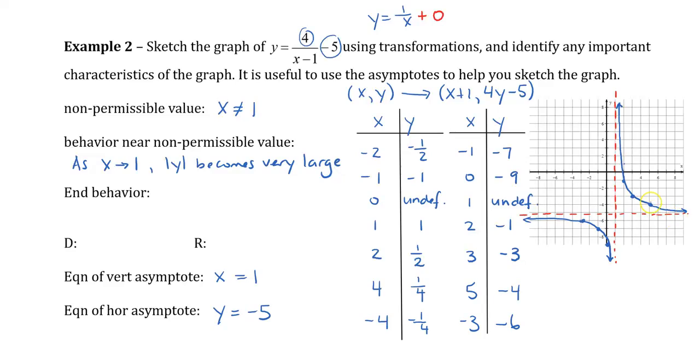My end behavior as x approaches positive infinity or negative infinity, notice that this time is going to approach this red horizontal line, which is actually negative 5. So we say that as the absolute value of x becomes very large, y approaches negative 5.